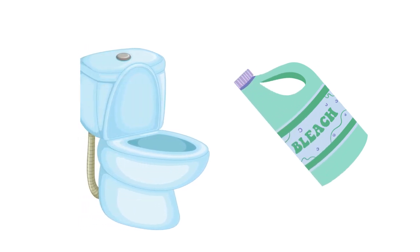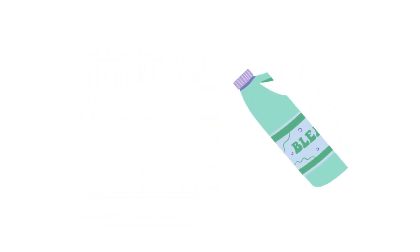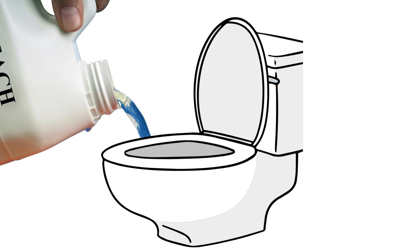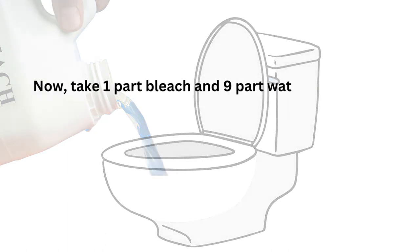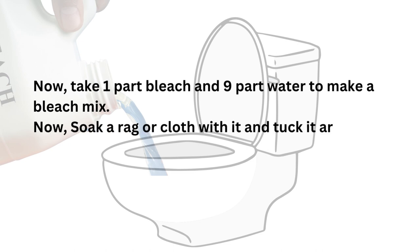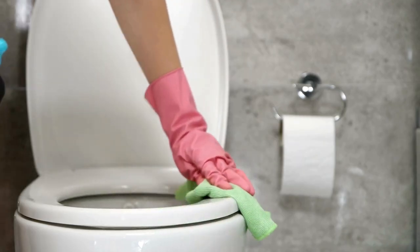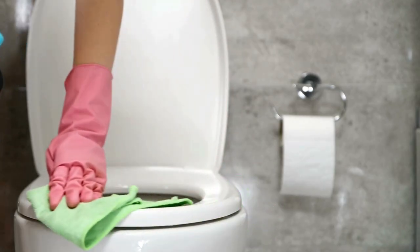Method 1: Removing Gray Sediments Using Bleach. First, soak the bowl with half a cup of bleach. Take one part bleach and nine parts water to make a bleach mix. Soak a rag or cloth with it and tuck it around the rim. Then clean the seat and scrub the whole toilet bowl thoroughly.